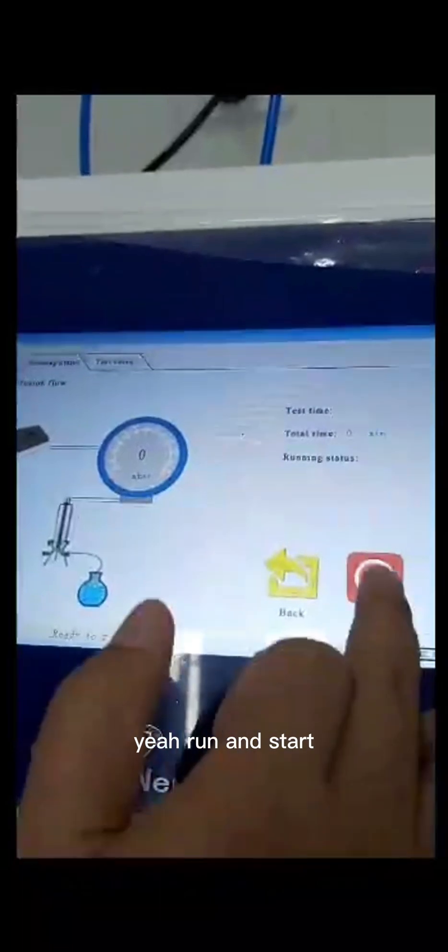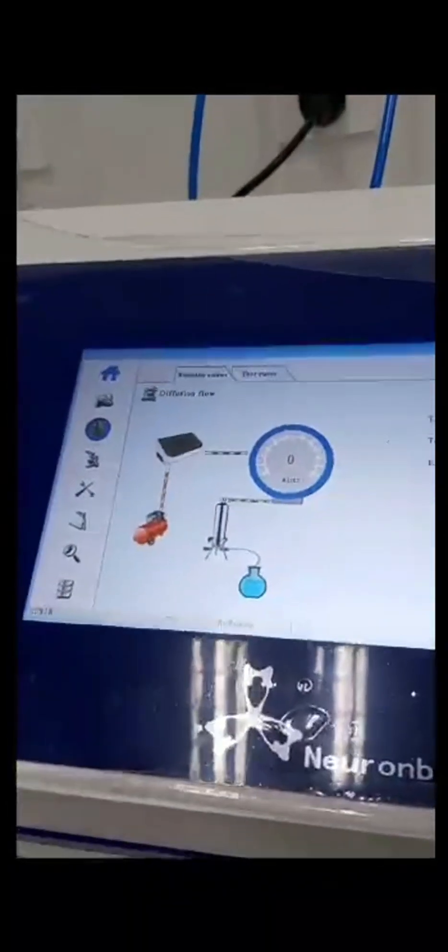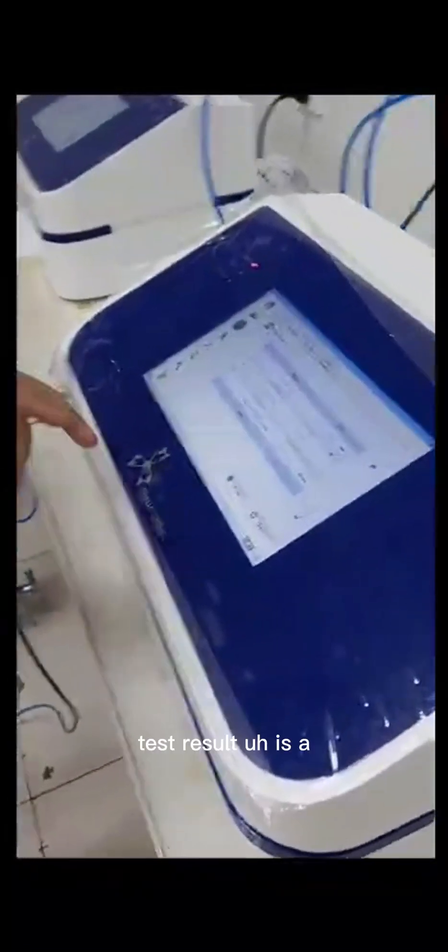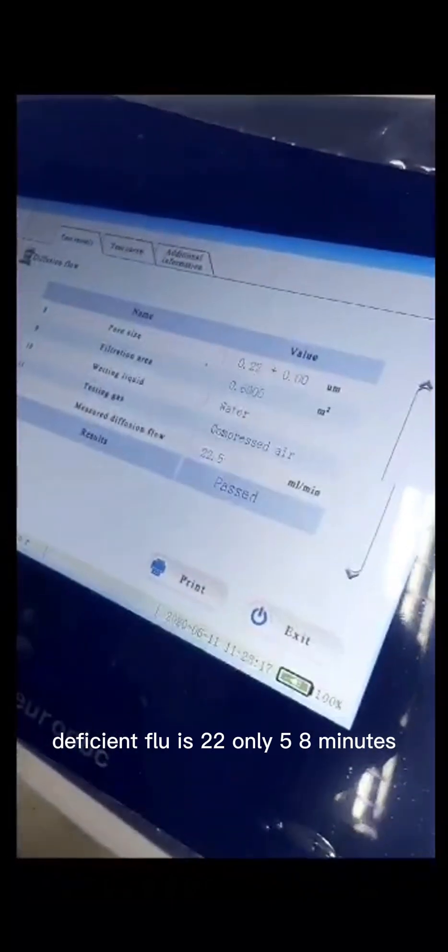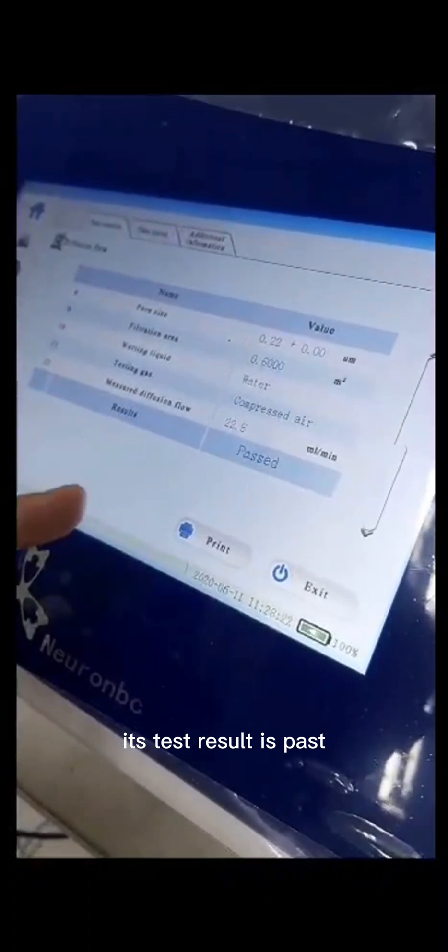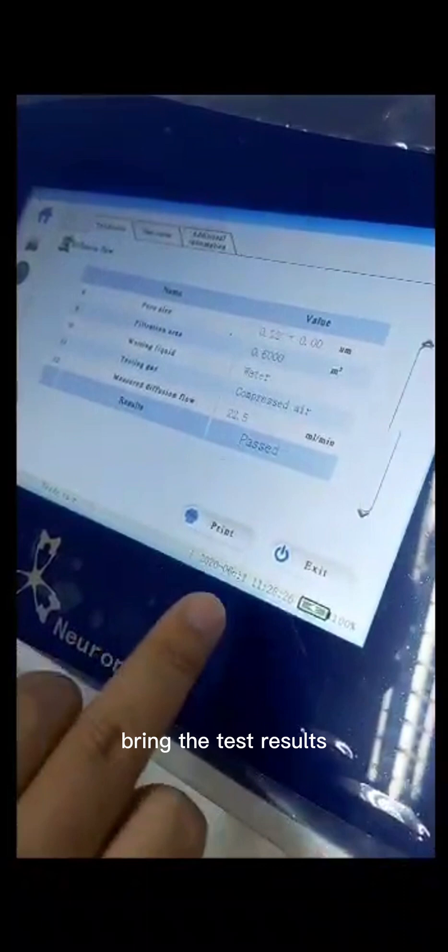Run and start. We already finished the test. Test result is a diffusion fluid is 22.5 ml per minute. It's a test result is passed. Now we print out. Print the test result.